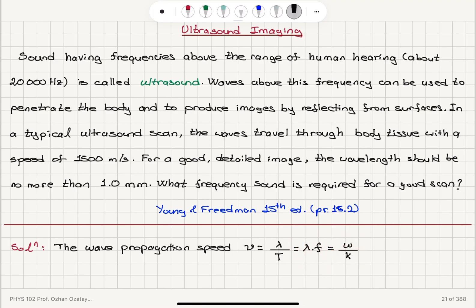So, if we want to calculate the frequency of sound that is required, f is the propagation speed v divided by the wavelength lambda. So,